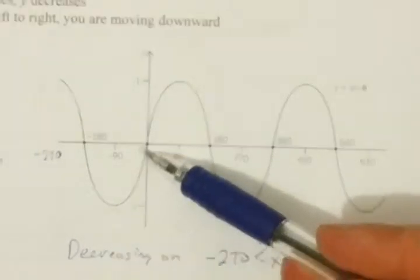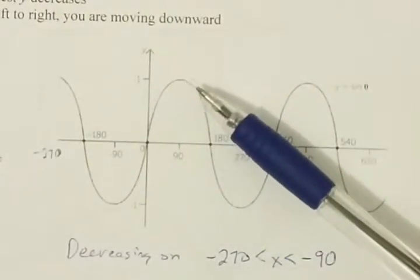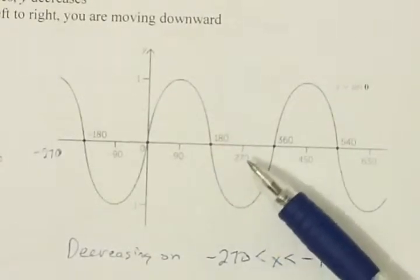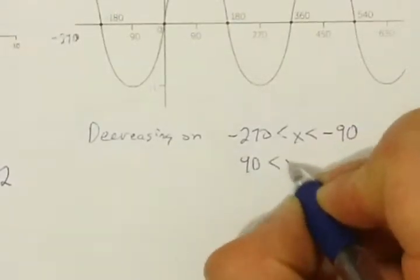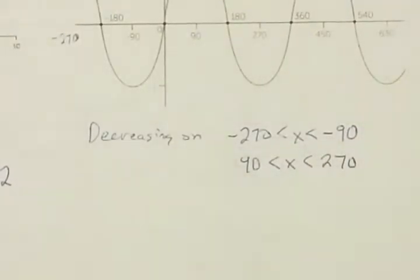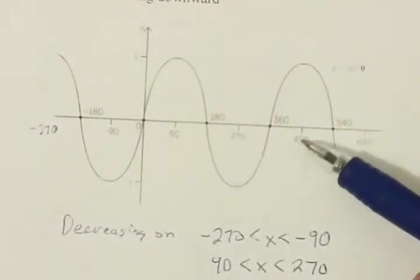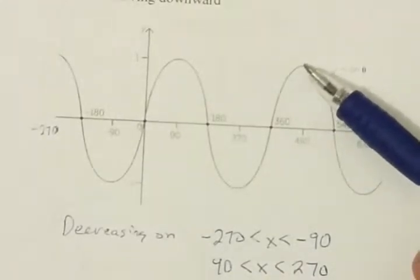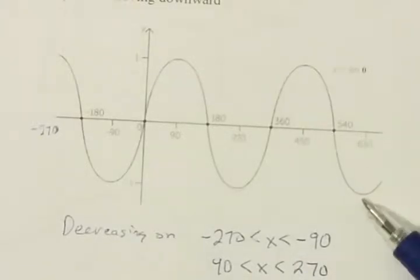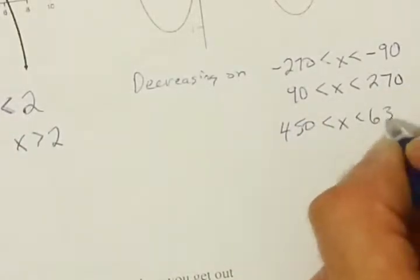Starting at negative 90, I'm going up and up. But then at positive 90, I go down all the way up to 270. So not only is that first interval a decrease, but this function is also decreasing from positive 90 up to positive 270. Then I go up again, and once I get to 450 degrees, I'm decreasing from x equals 450 all the way up to 630.